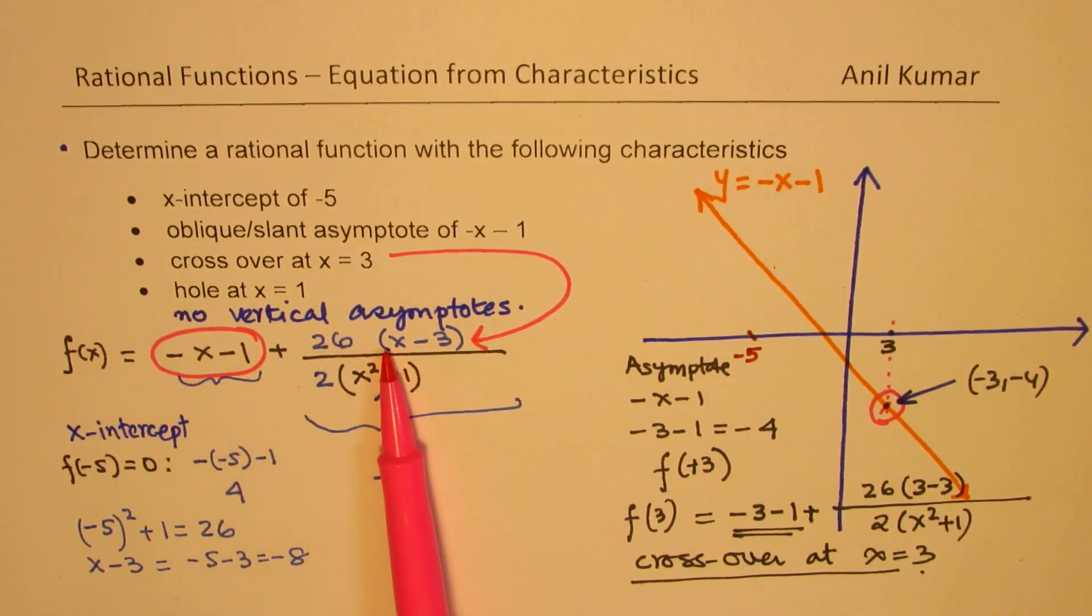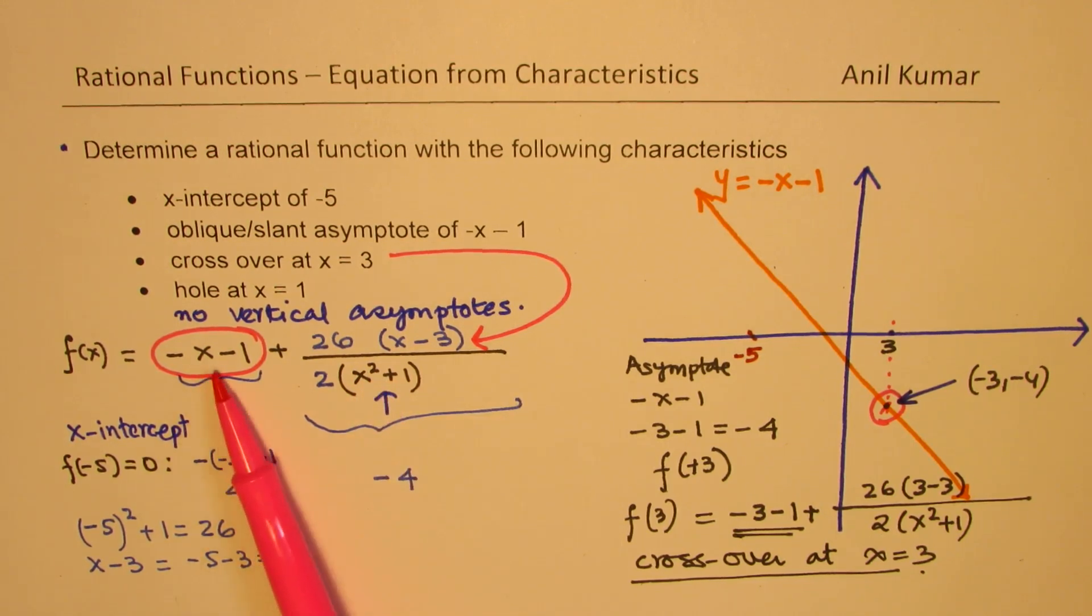So we have done both things. So to get the x-intercept, we have the combination to be 0. And to get this crossover, we have got to have this part of a rational function to be 0. So that we have the same value for the asymptote, oblique asymptote, and the rest of the function.